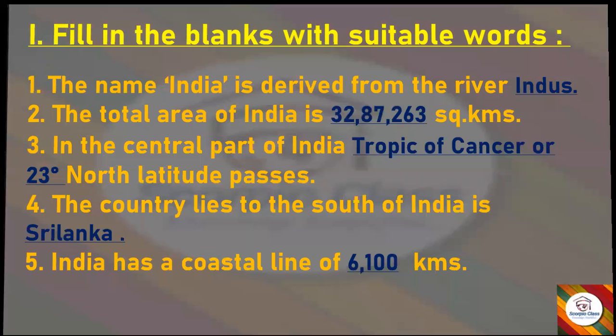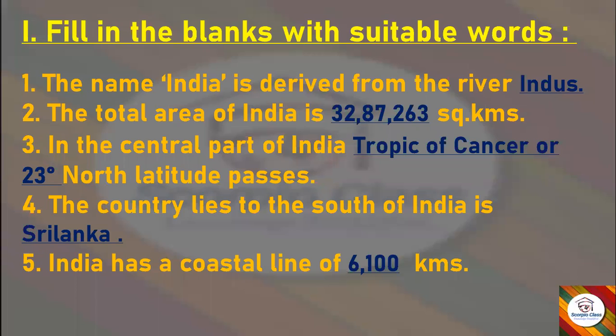Let's get started with the first section: Fill in the Blanks with suitable words. First: The name India is derived from the river — answer: Indus. Second: The total area of India is — answer: 32,87,263 square kilometers. Third: In the central part of India, which north latitude passes — answer: Tropic of Cancer, or 23 degrees north.